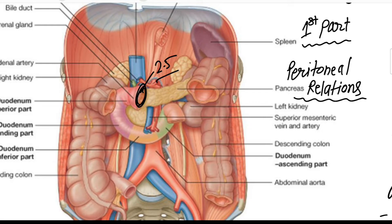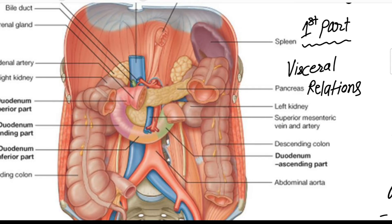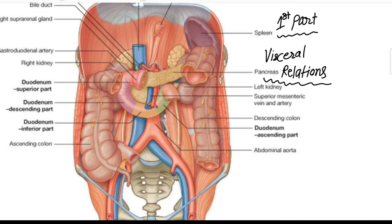Regarding peritoneal relations of the first part: the initial 2.5 centimeters is movable, attached above to the lesser omentum and below to the greater omentum. The rest of the 2.5 centimeters is fixed and retroperitoneal — behind the peritoneum — meaning only the anterior surface is covered by the peritoneum.